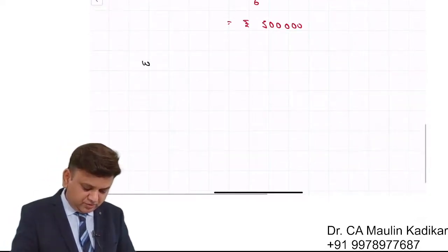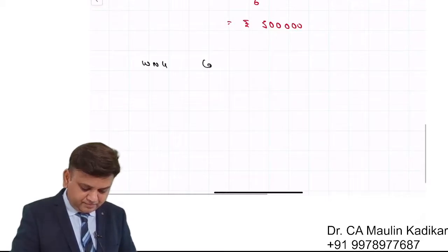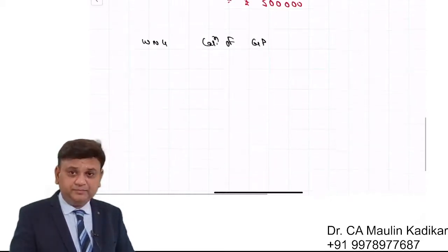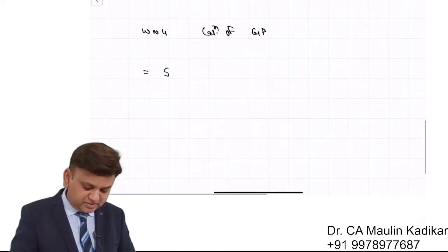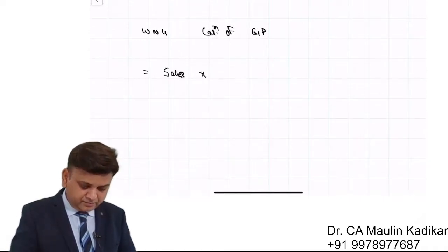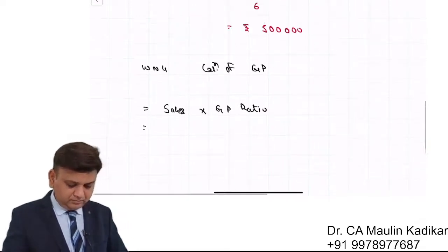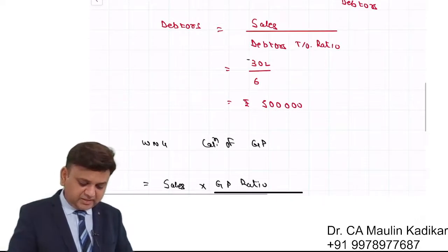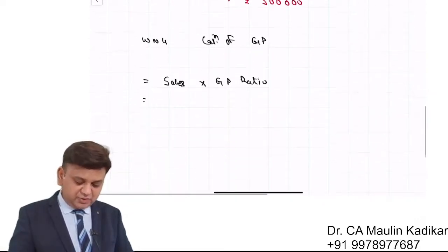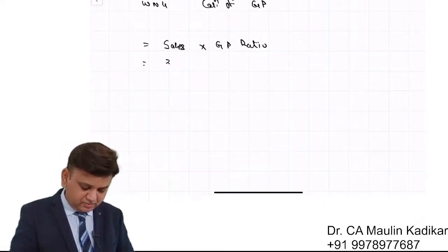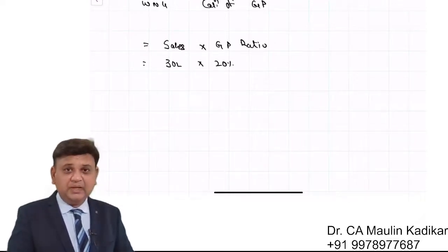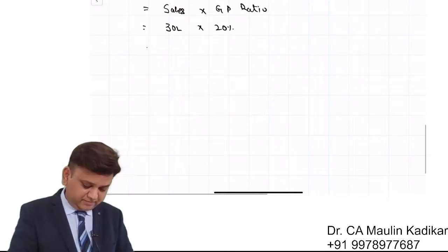Working Note 4: Calculation of gross profit. It is sales × GP ratio = 30 lakhs × 20%, which comes to Rs. 6 lakhs.